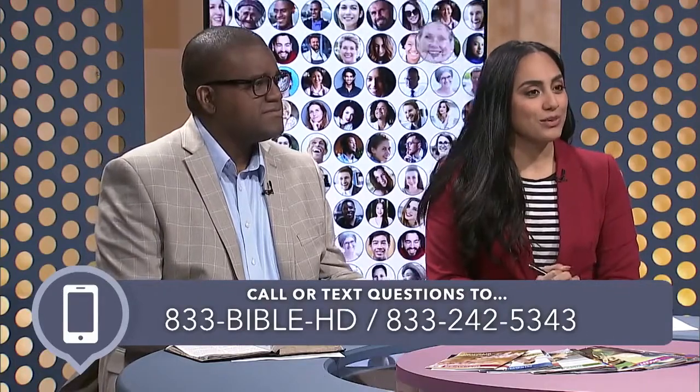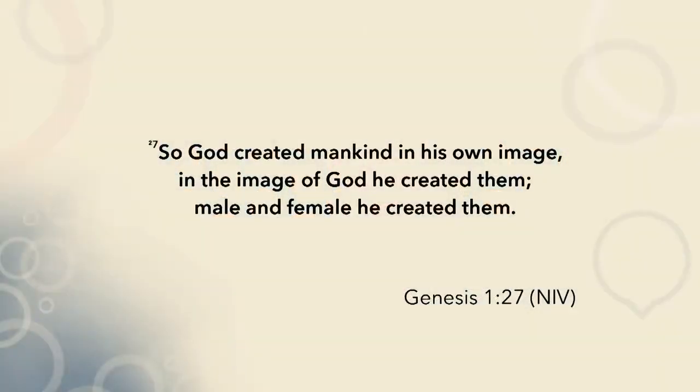This person wants to understand what Deuteronomy 22:5 is talking about. There are different opinions on how to interpret it, but it's good to go to the beginning of the Bible — Genesis 1:27 (NIV) — because that's the beginning of the creation story. 'God created mankind in his own image, in the image of God he created them, male and female he created them.' So genders were established by God at creation.